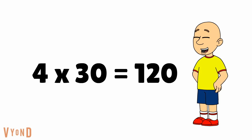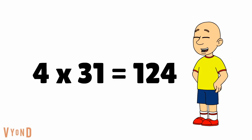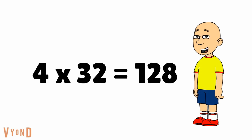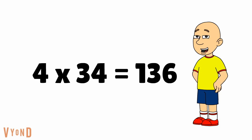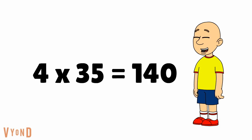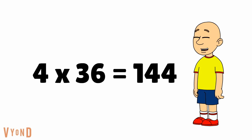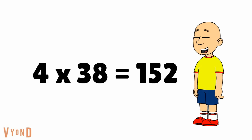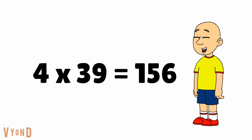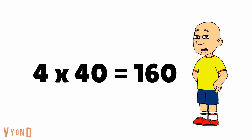4 times 30 equals 120, 4 times 31 equals 124, 4 times 32 equals 128, 4 times 33 equals 132, 4 times 34 equals 136, 4 times 35 equals 140, 4 times 36 equals 144, 4 times 37 equals 148, 4 times 38 equals 152, 4 times 39 equals 156, 4 times 40 equals 160.